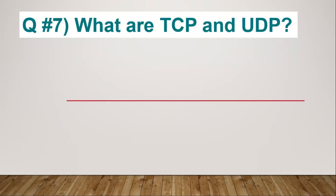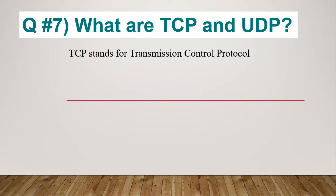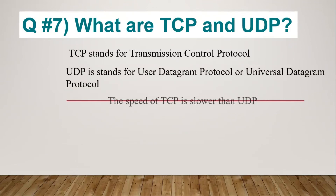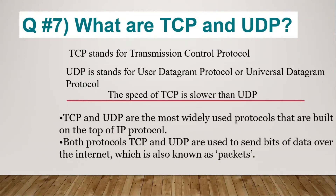Question number seven: What are TCP and UDP? TCP stands for Transmission Control Protocol. UDP stands for User Datagram Protocol. The speed of TCP is slower than UDP — this is the main point which differentiates TCP from UDP. TCP and UDP are the most widely used protocols built on top of the IP protocol. Both are used to send bits of data over the internet, also known as packets.